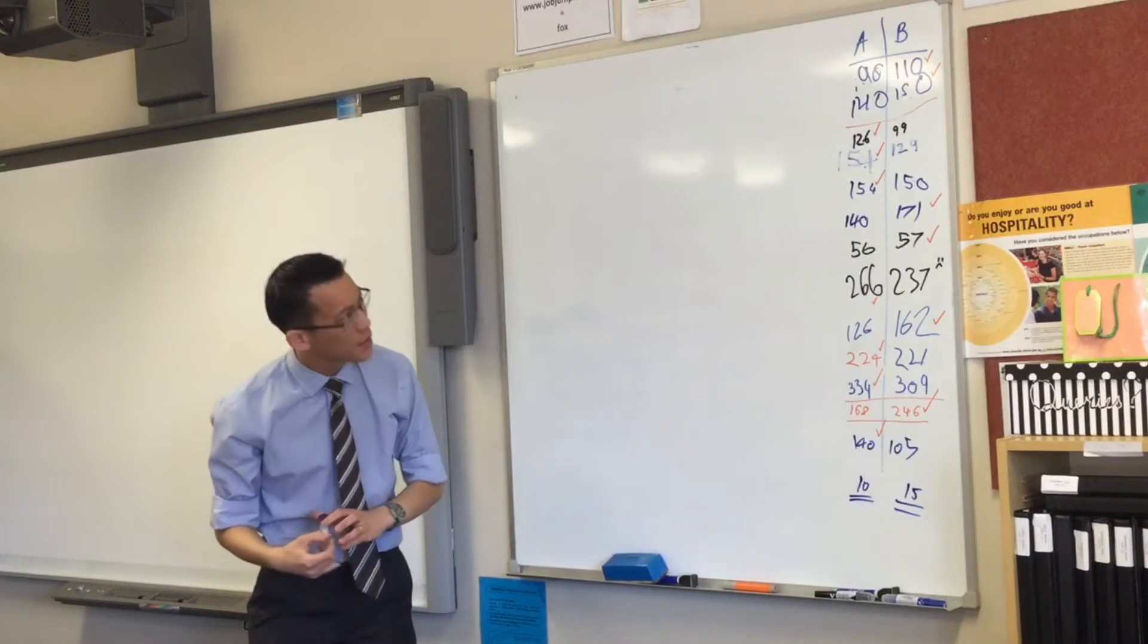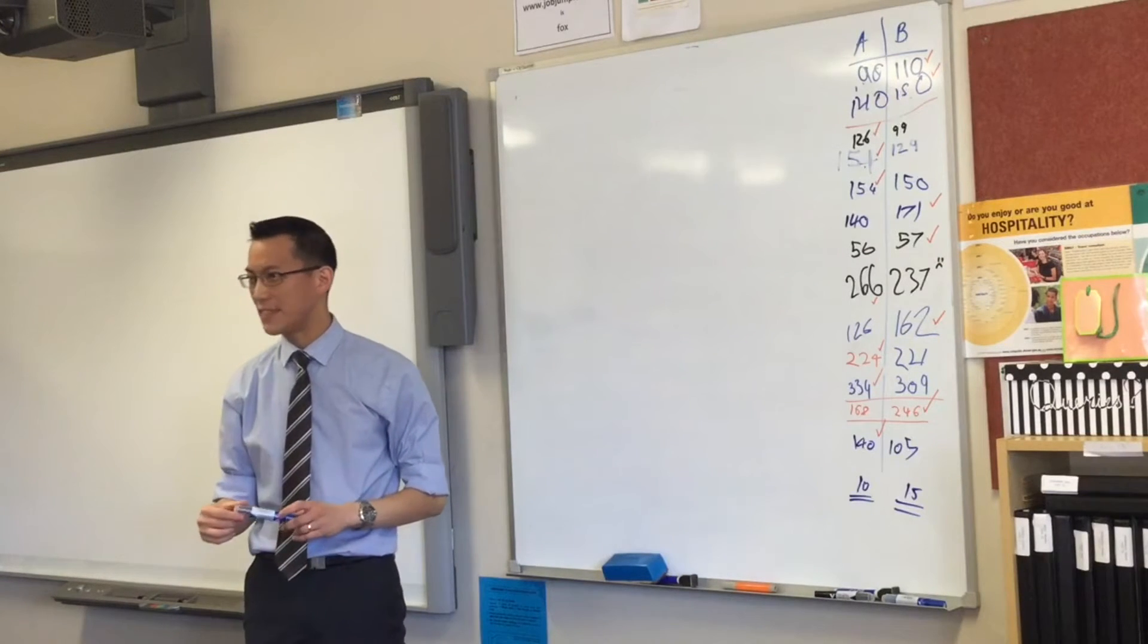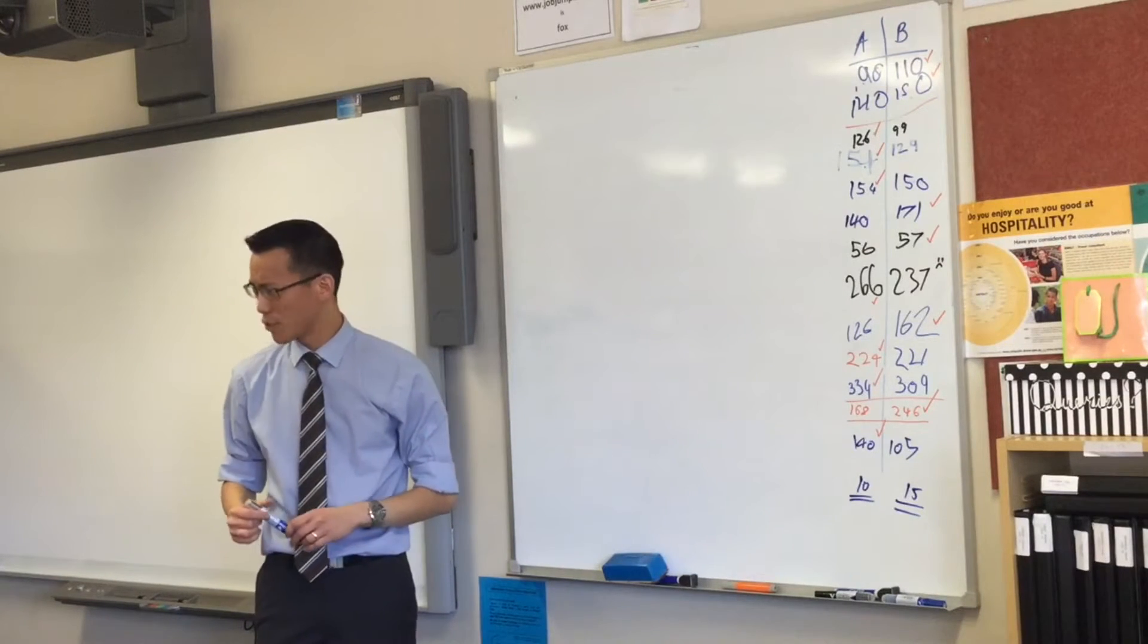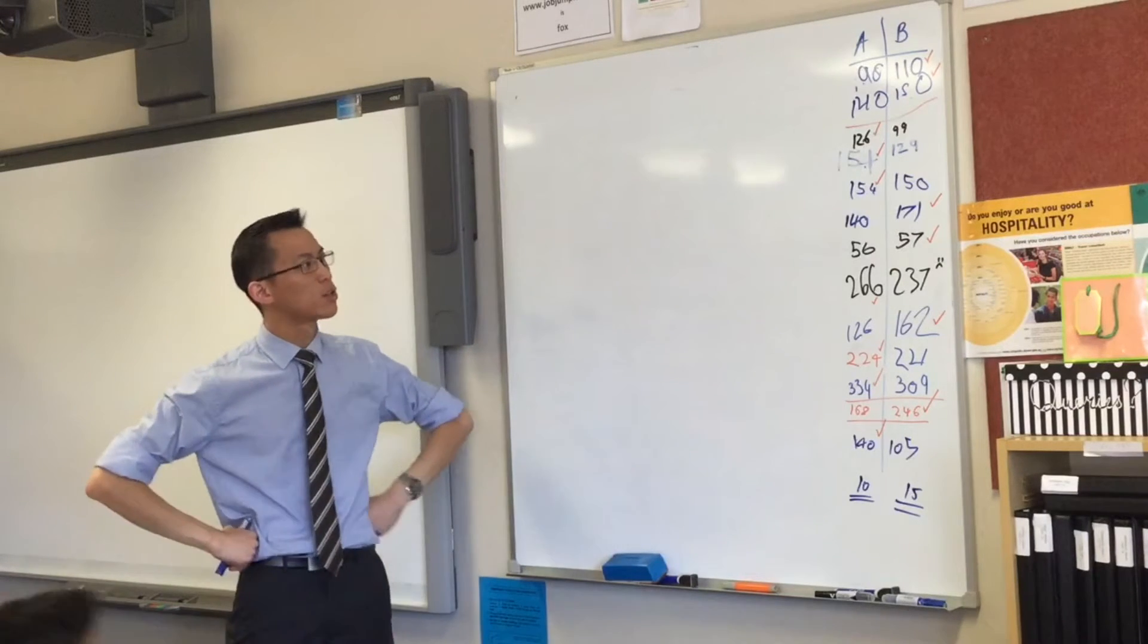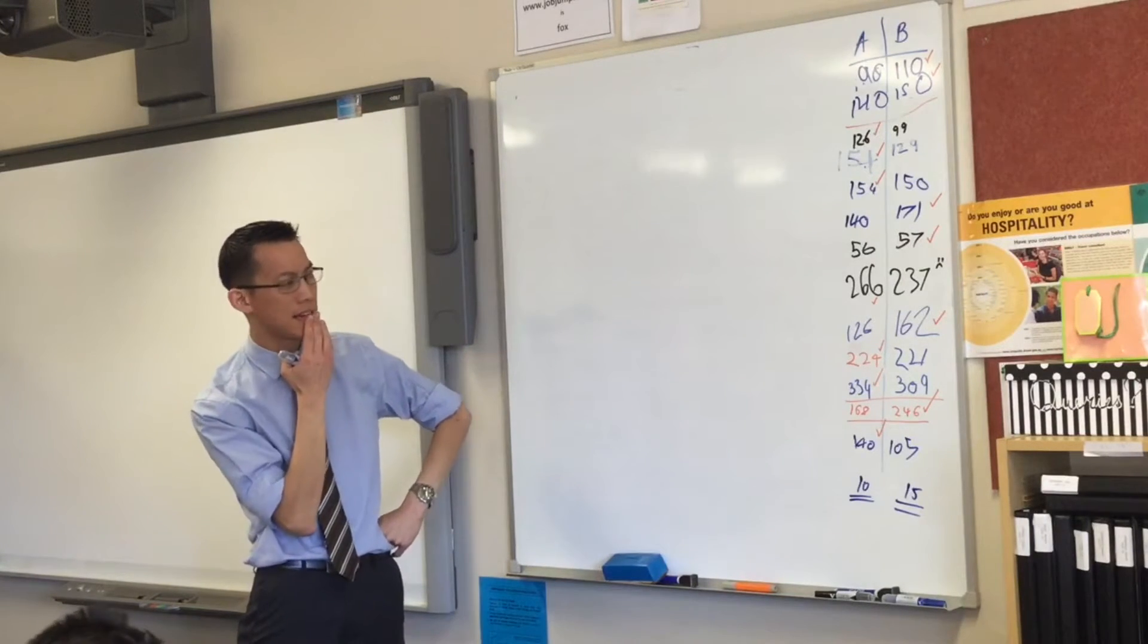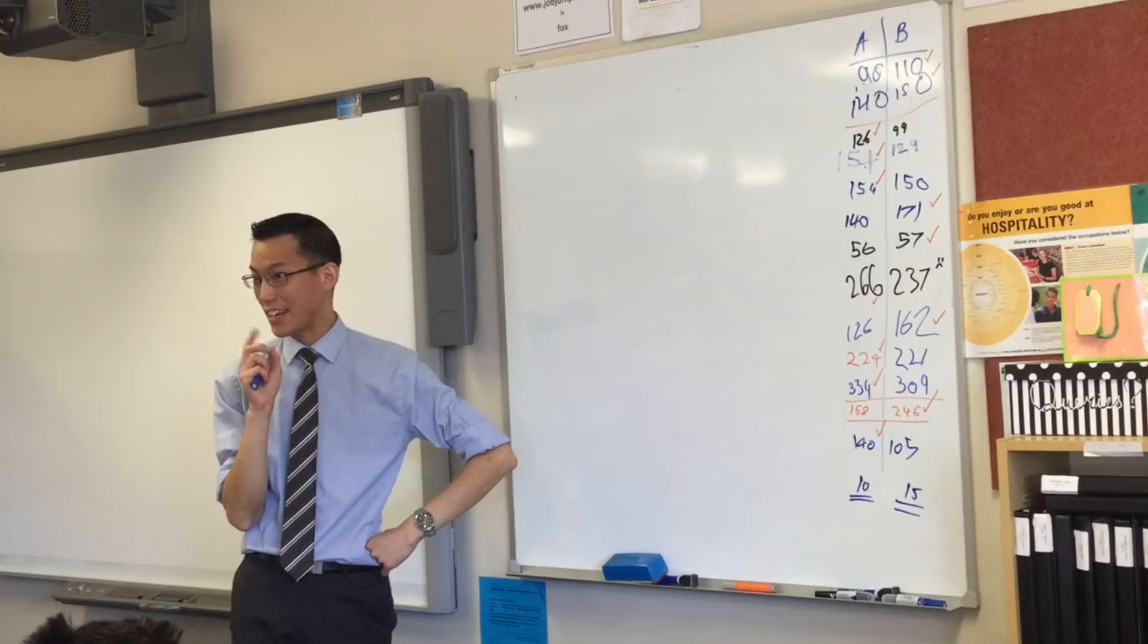Now, if you have a look, it seems quite evenly split, doesn't it? It's pretty close. How many A's have won? 7. Looks like 7 and how many B's? 6. That's very close, isn't it?